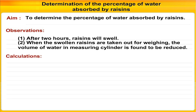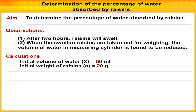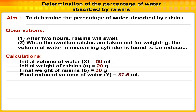Calculations: 1. Initial volume of water X is 50 ml. 2. Initial weight of raisins A is 20 g. 3. Final weight of raisins B is 30 g. 4. Final reduced volume of water Y is 37.5 ml.